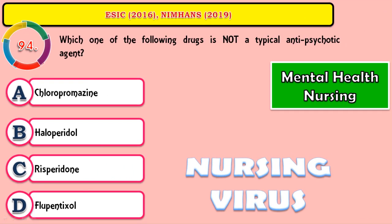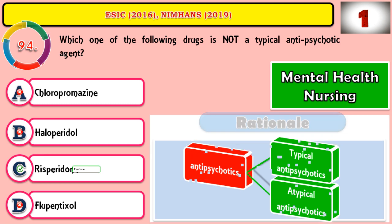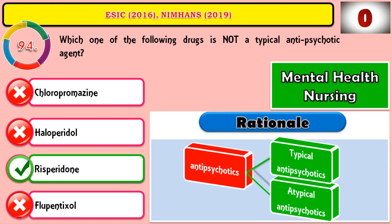Question 94: Which one of the following drugs is not a typical antipsychotic agent? The correct answer is risperidone, which belongs to atypical antipsychotics. The remaining three drugs belong to typical — that is, first-generation antipsychotic drugs.